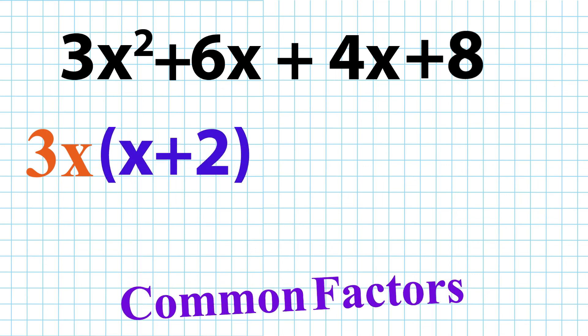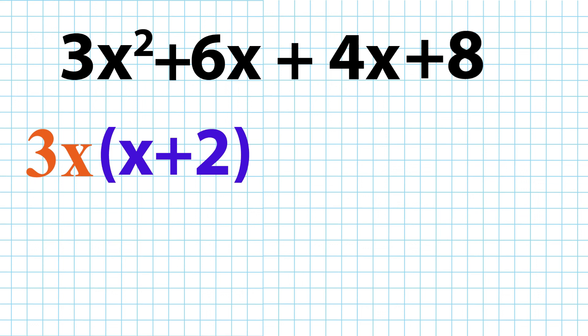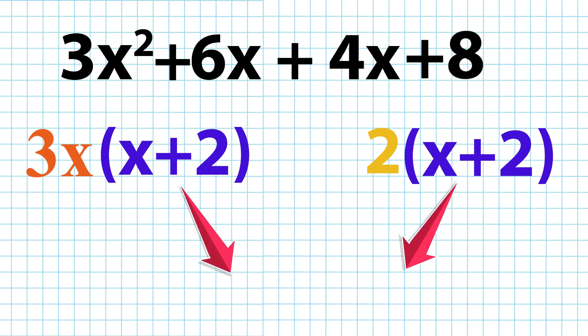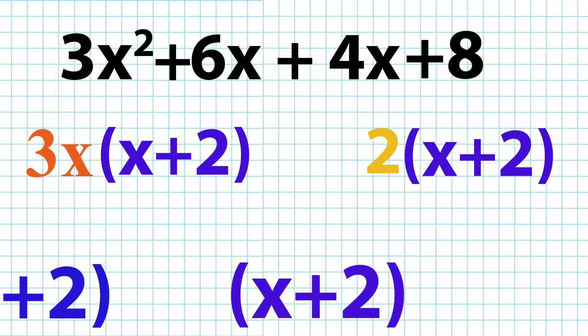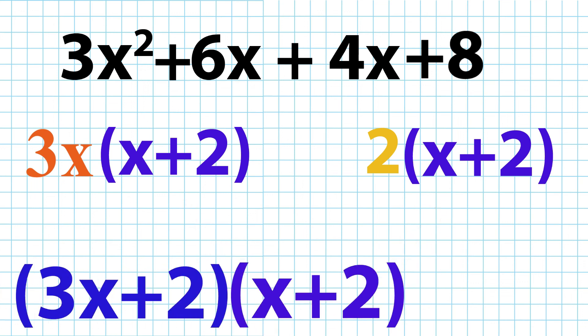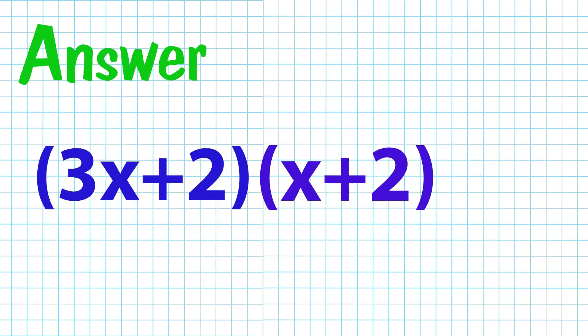3x, x plus 2. This is our factorization. 3x, x plus 2 and 2 multiplied by x plus 2. Again, the common factor would be x plus 2. So, 3x plus 2 multiplied by x plus 2 is the final answer.